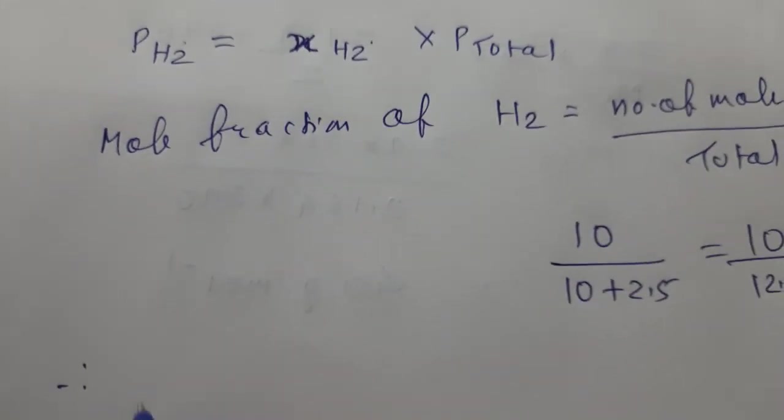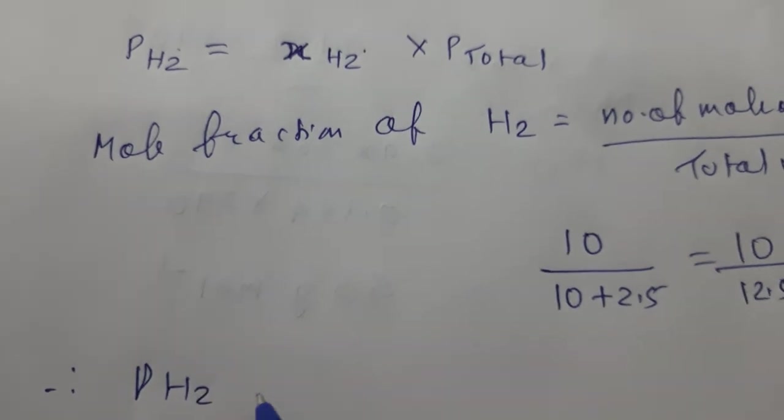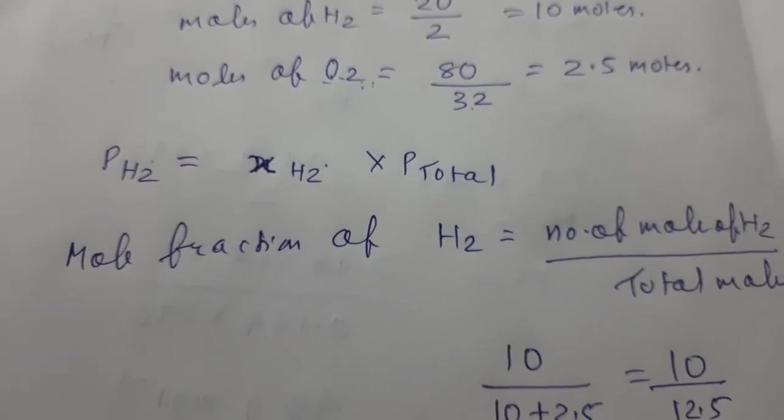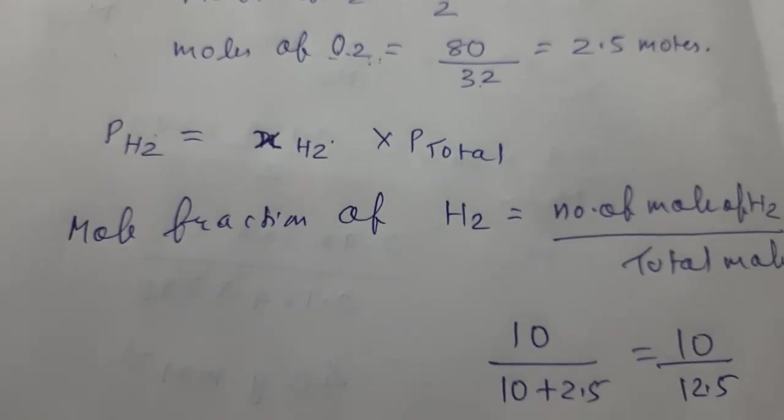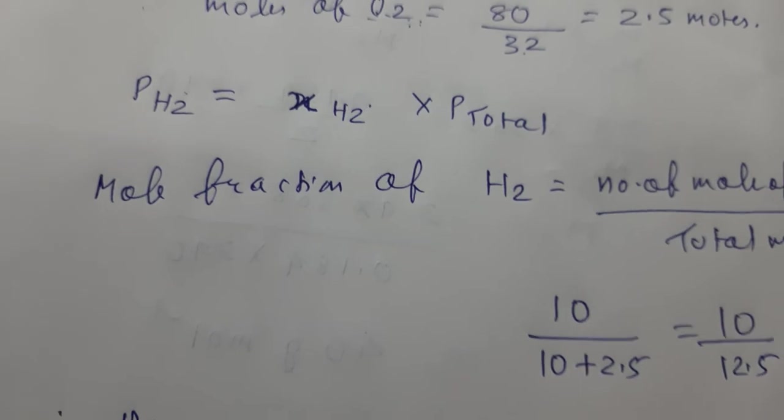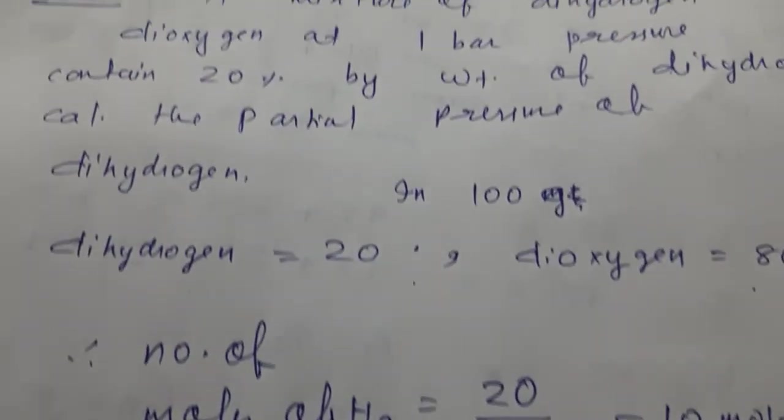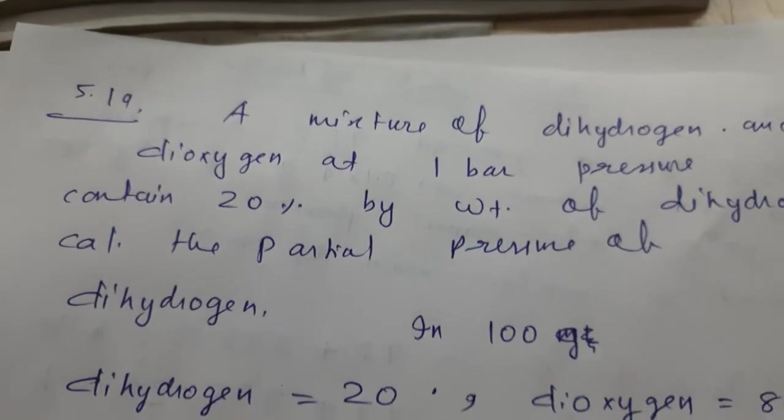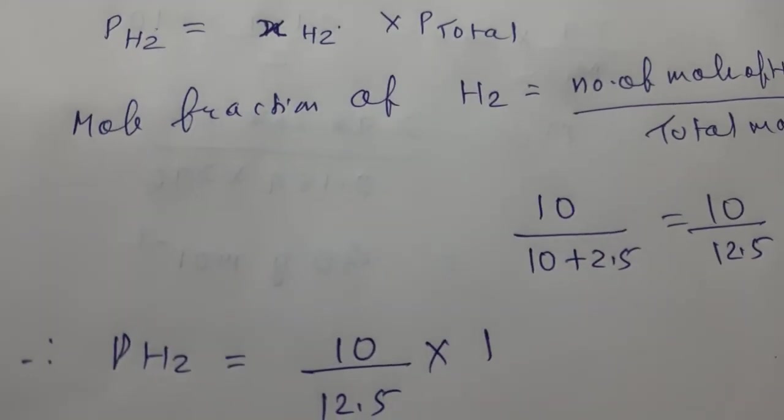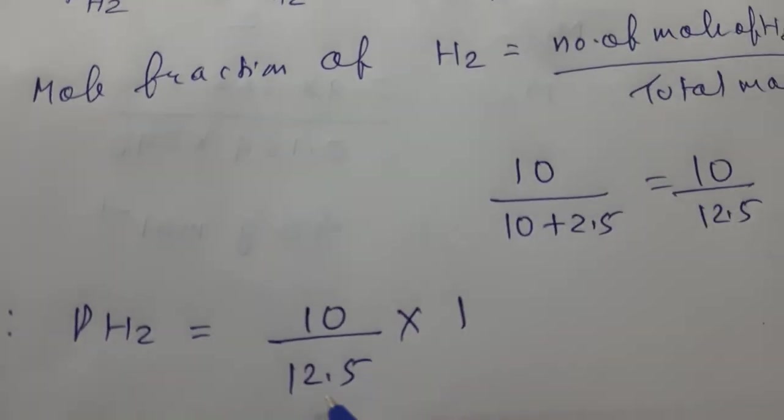Therefore, partial pressure of H2 will be given by mole fraction, that is X of H2, which is 10 divided by 12.5 into P total. P total is given as one bar. It is given at one bar pressure. So into one.